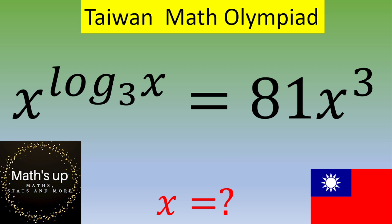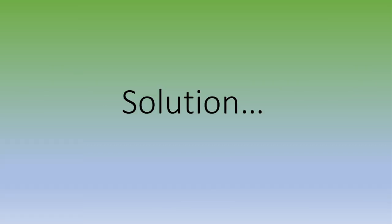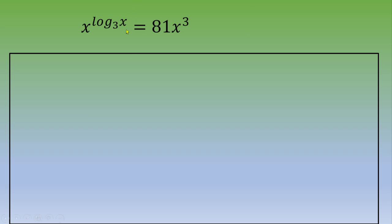Log base 3 of X should be a positive number, and because we've got a power, we can take the log on both sides and then apply this formula: log base a of X to the power of Y equals Y times log base a of X.